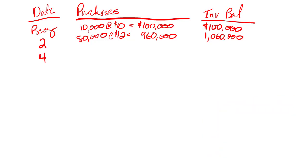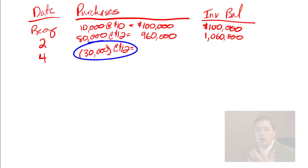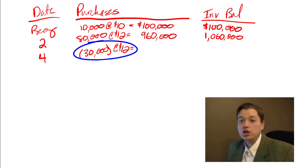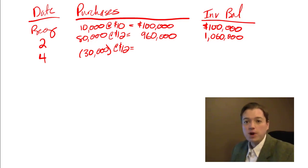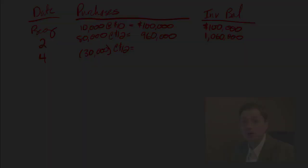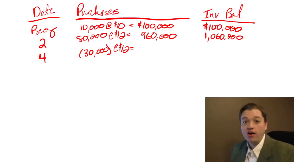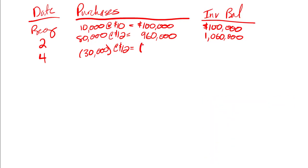The next transaction is the fourth one, where instead of a purchase I have a return. I've sent back 30,000 units at $12 each. Notice that for FIFO, LIFO, or weighted average, returns are handled the same way — you go back to the exact purchase order and find out exactly what you paid for those items. You're not using any cost-flow assumption for a return or discount. I know exactly which units they are. So this reduces the value of my inventory by $360,000, bringing me down to $700,000 total.